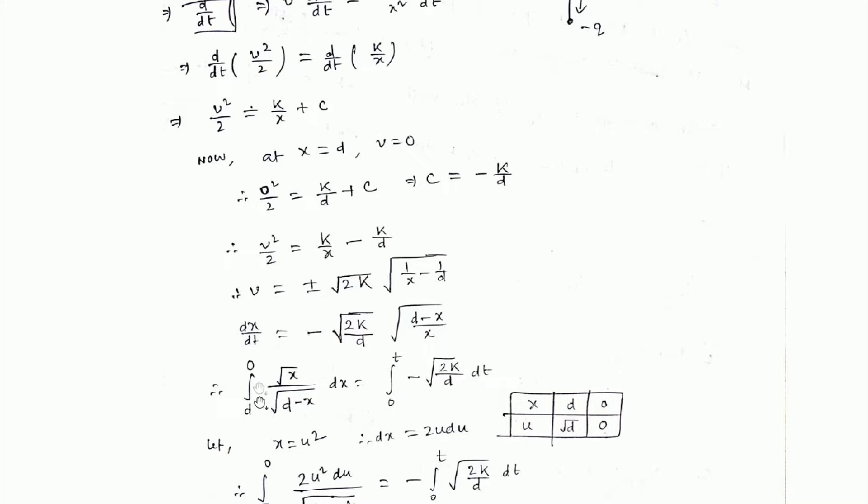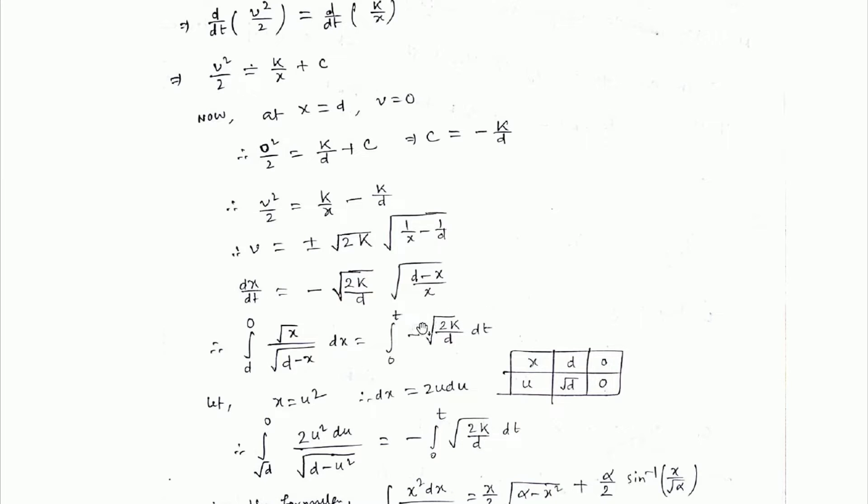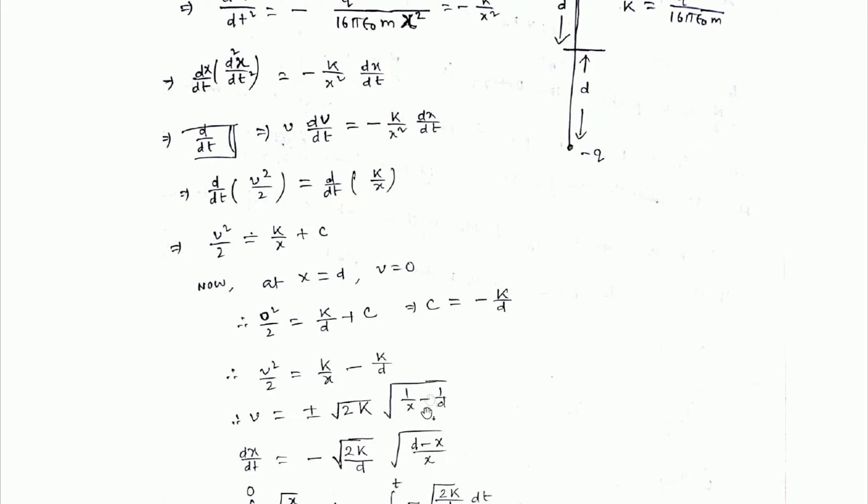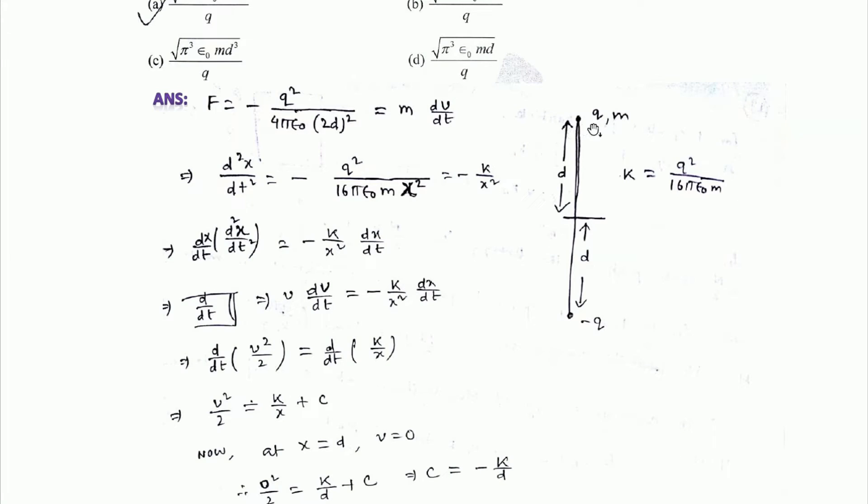dx/dt equals minus √(2k/d) times √((d-x)/x). Integrating both sides, we separate the x terms and t terms. The particle is coming from distance d to 0, and with time 0 to t, so these are the integration limits.